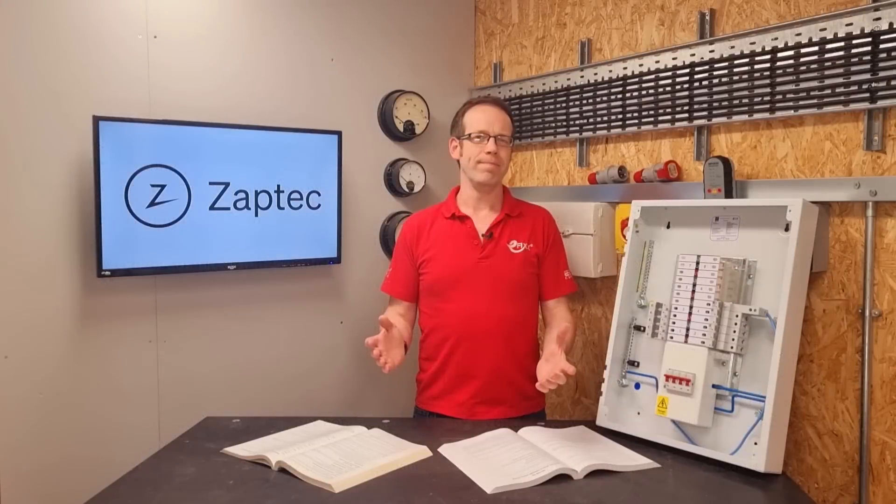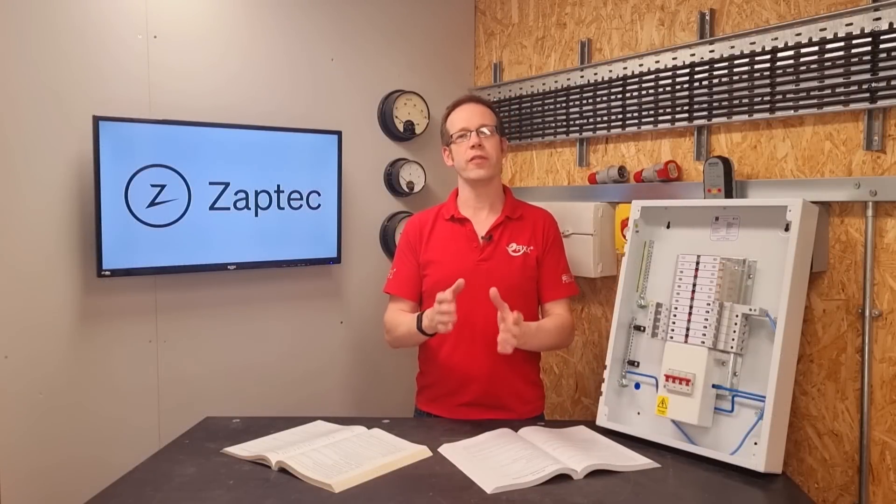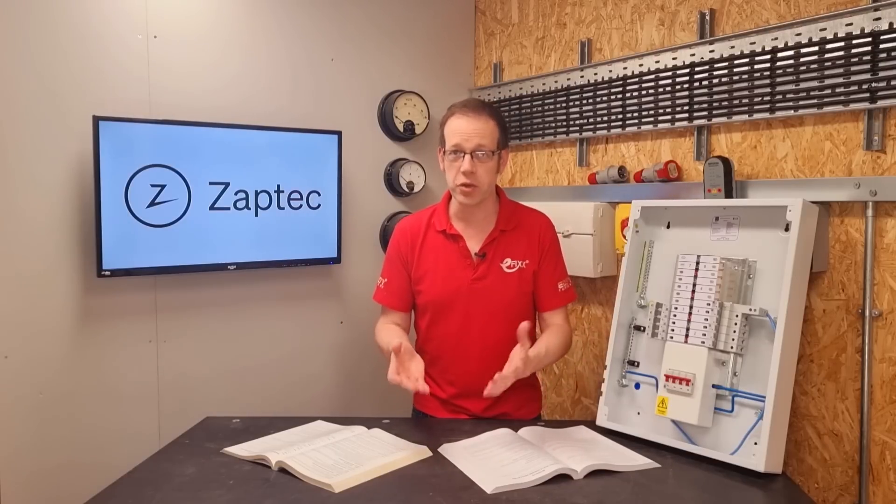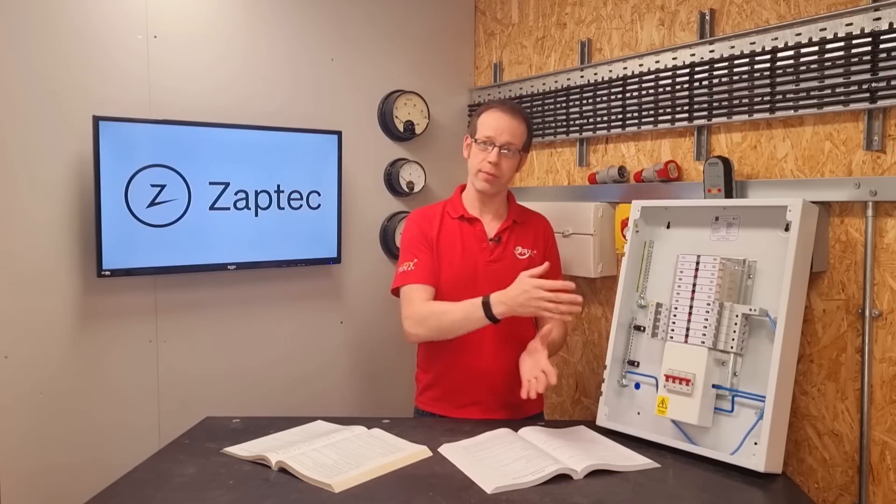So why would that happen? Well we said that in a balanced load the current trying to flow down the neutral and therefore the voltage to earth would be zero. However, the problem occurs when the loads become unbalanced and you have different amounts of current flowing through the three line conductors.